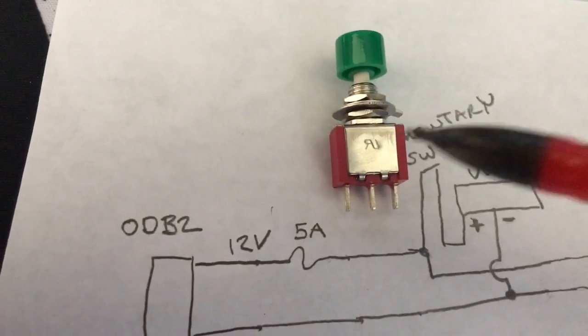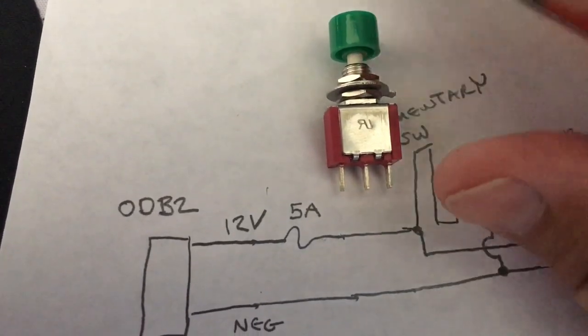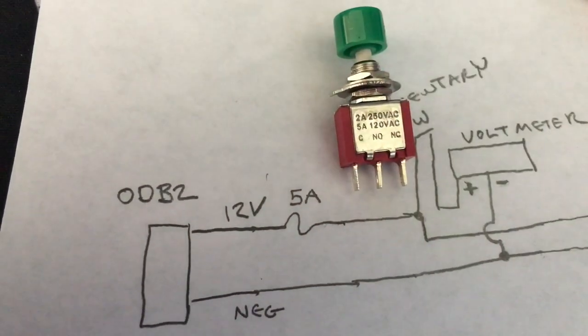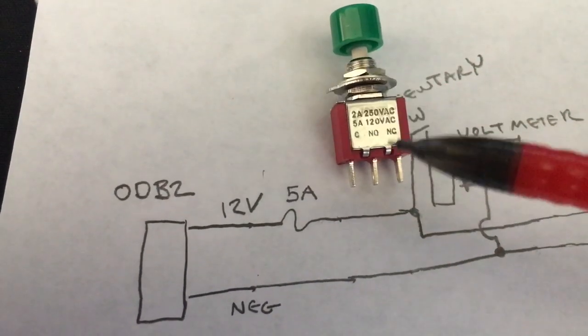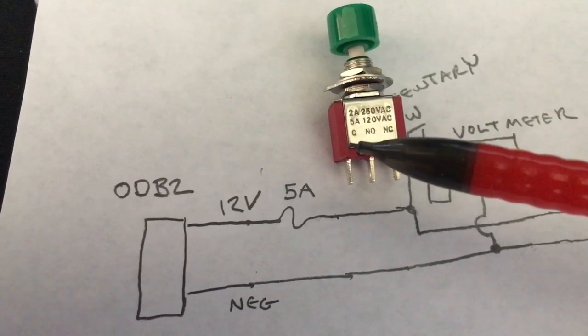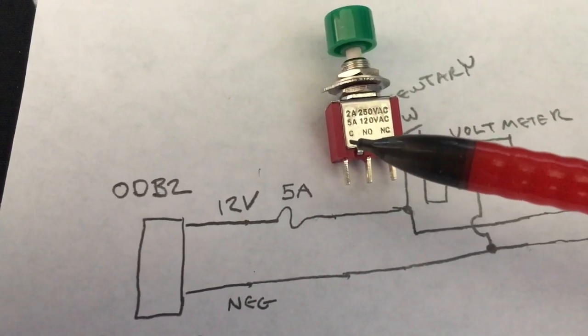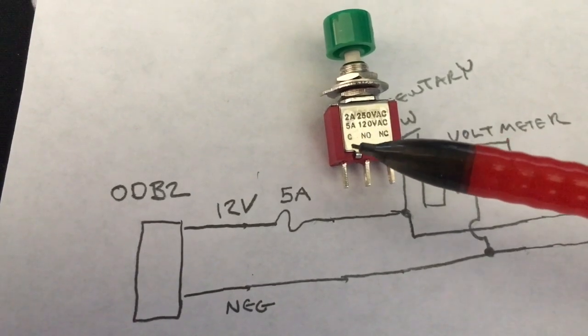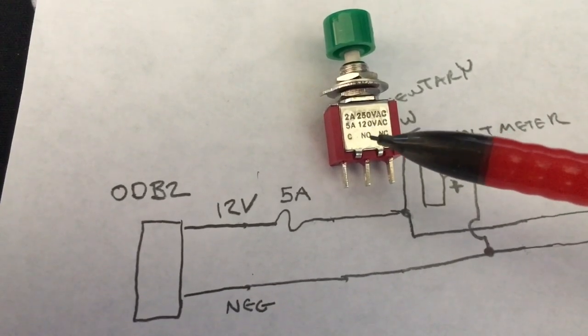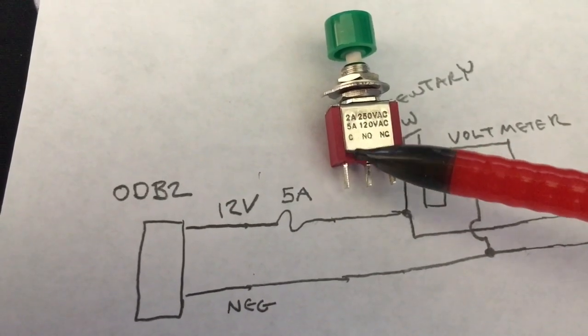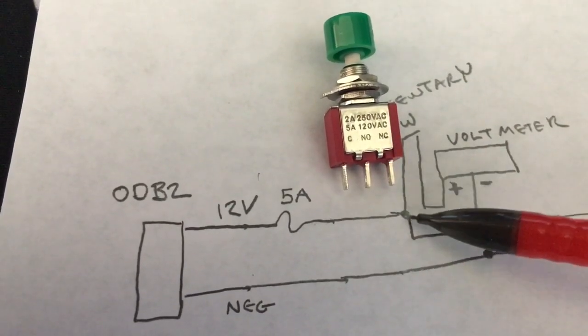I've chosen to put a momentary switch in and you can see that it has a normally open and a common and I'm hooking the voltmeter positive into the normally open connection and I'm connecting just on to the 12 volt positive line.